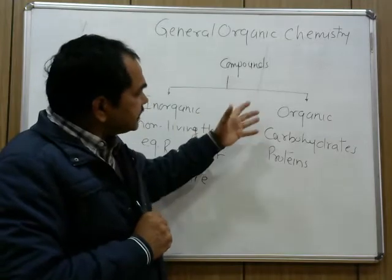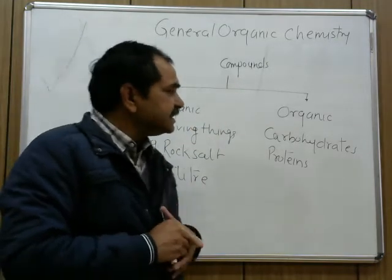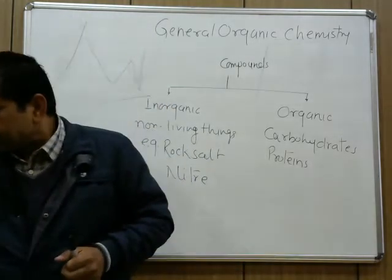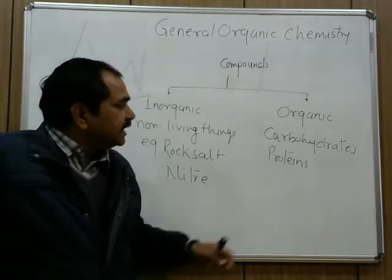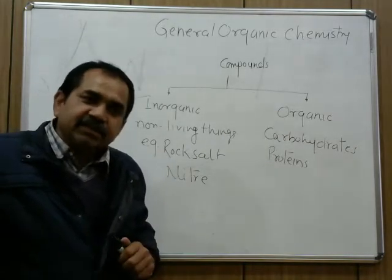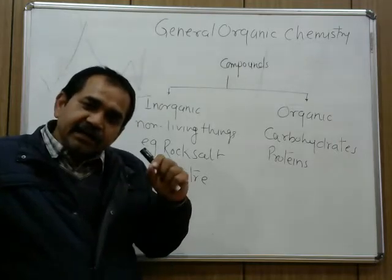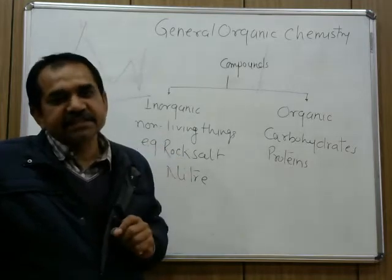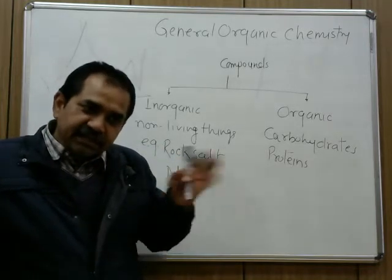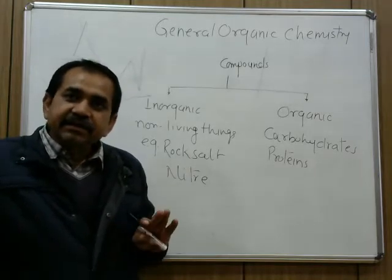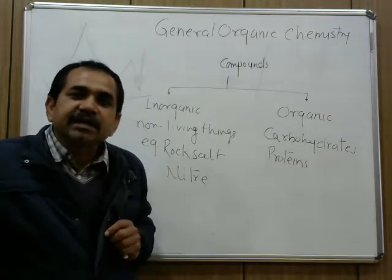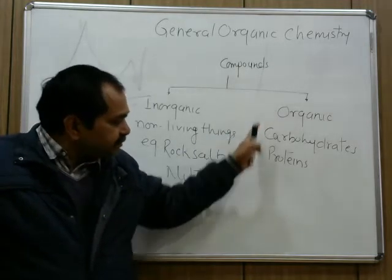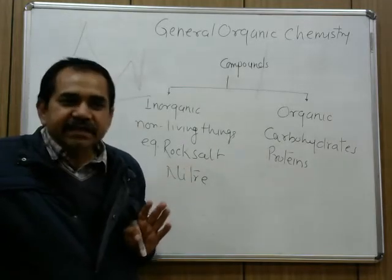That is how the two terms organic and inorganic came into existence. Later on, it was found that in the structure of all compounds classified as organic, carbon was present as one of the essential elements. All those compounds classified as organic were basically compounds of carbon. That is how the branch of organic chemistry arose.